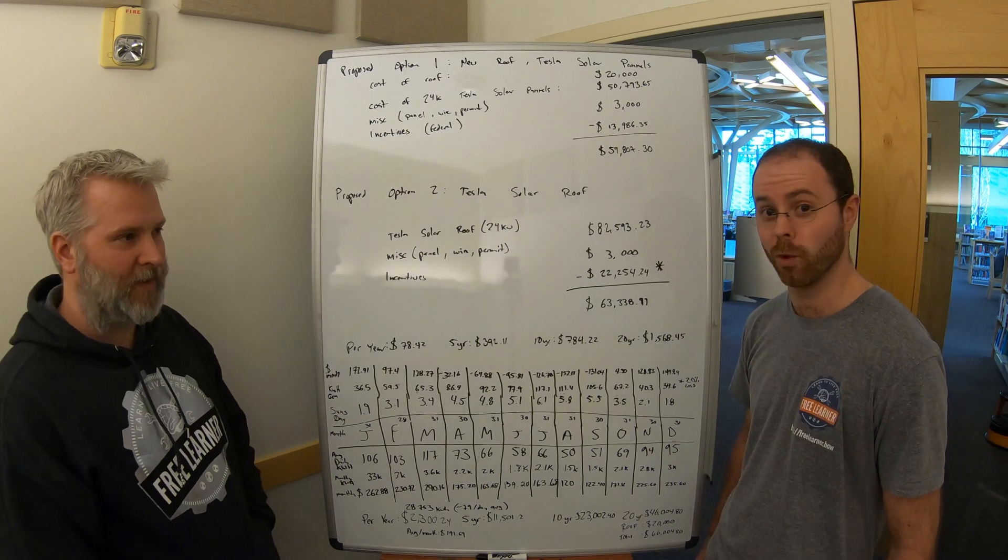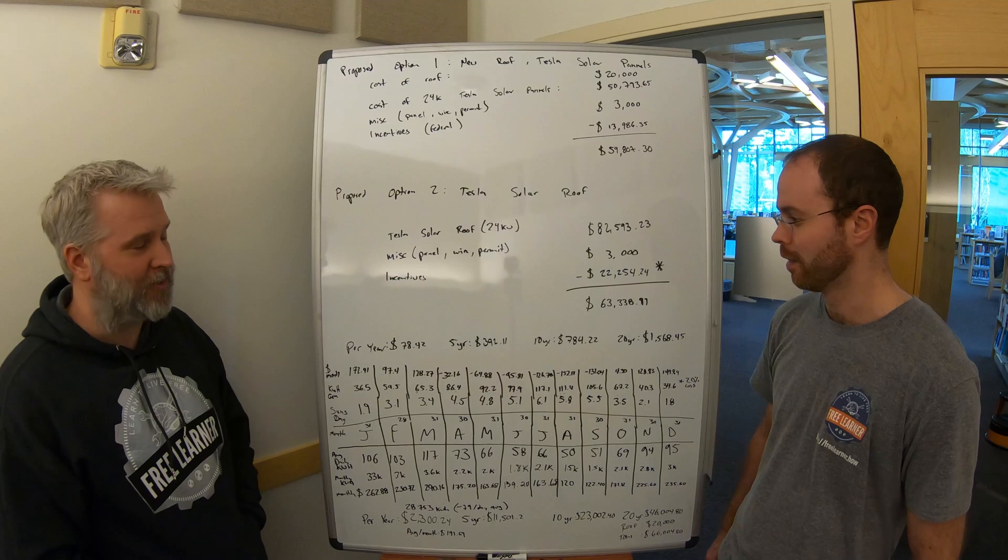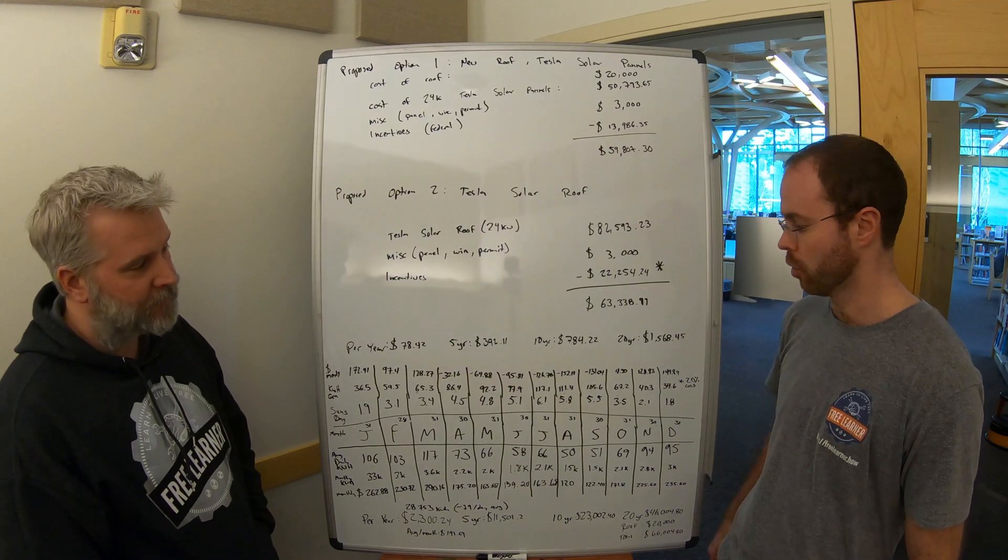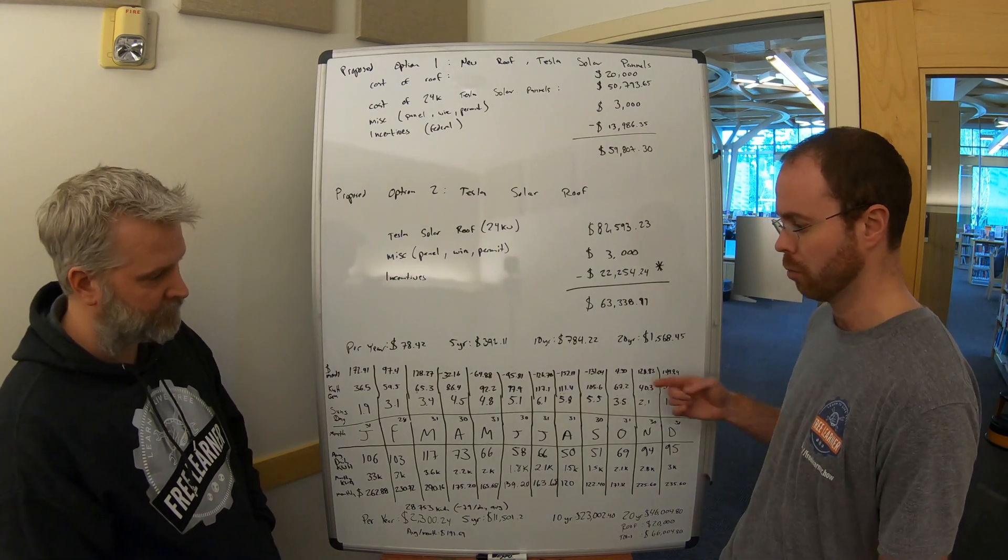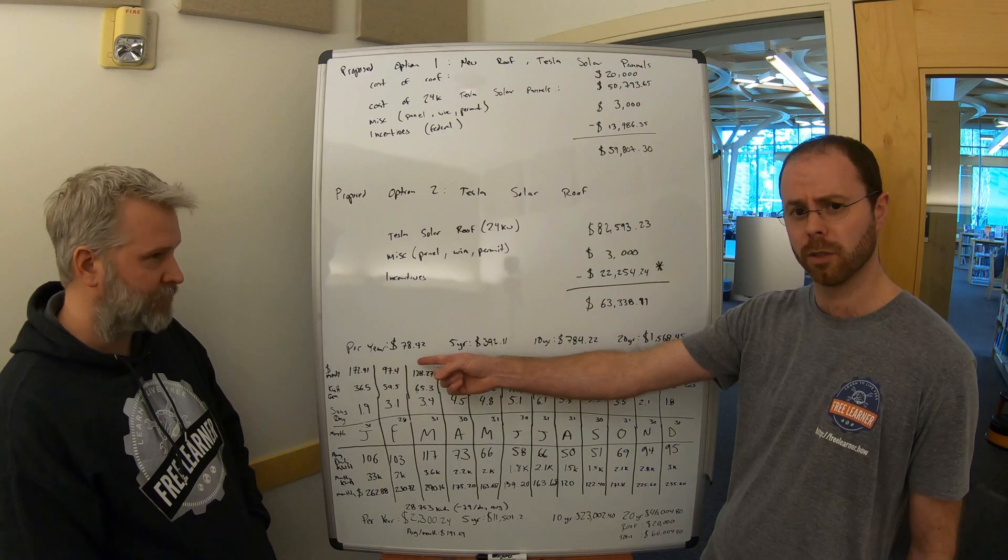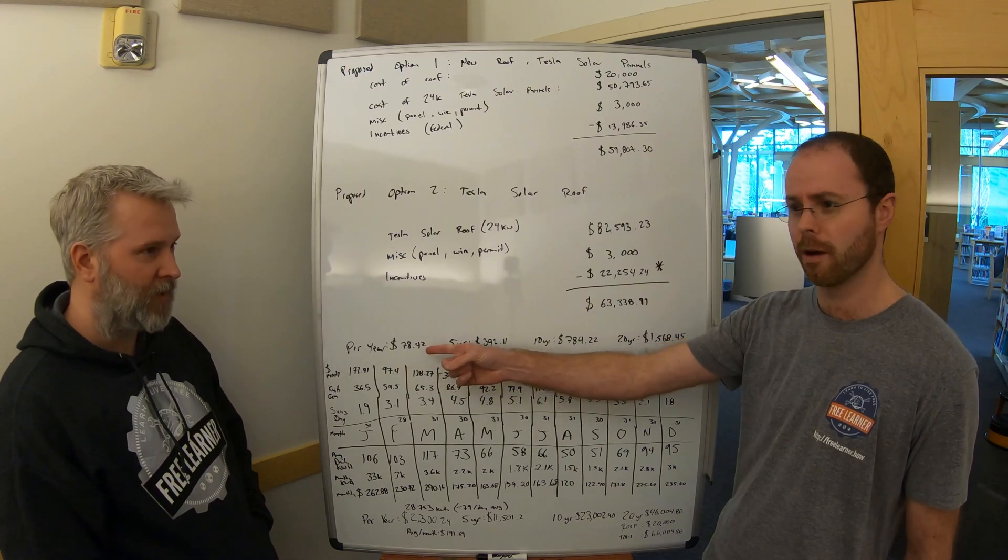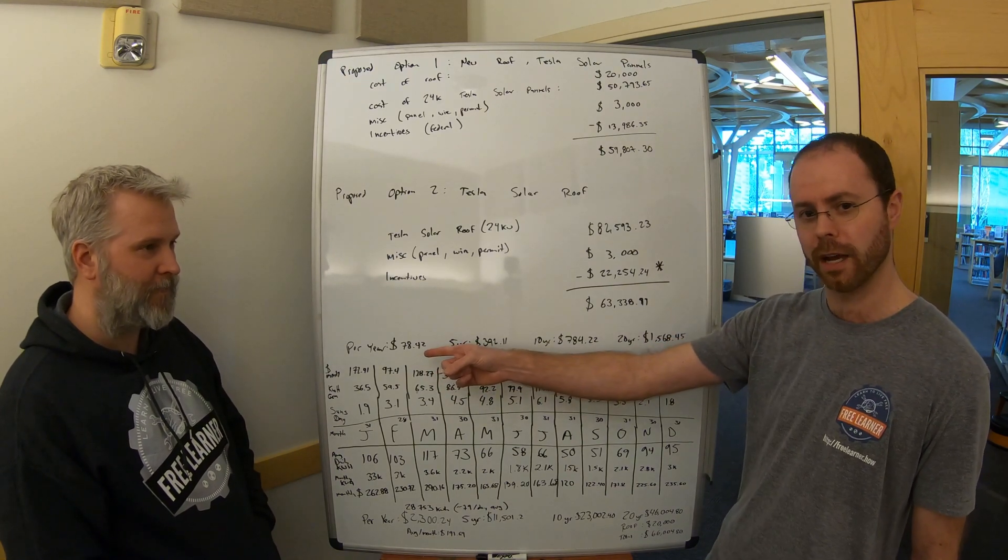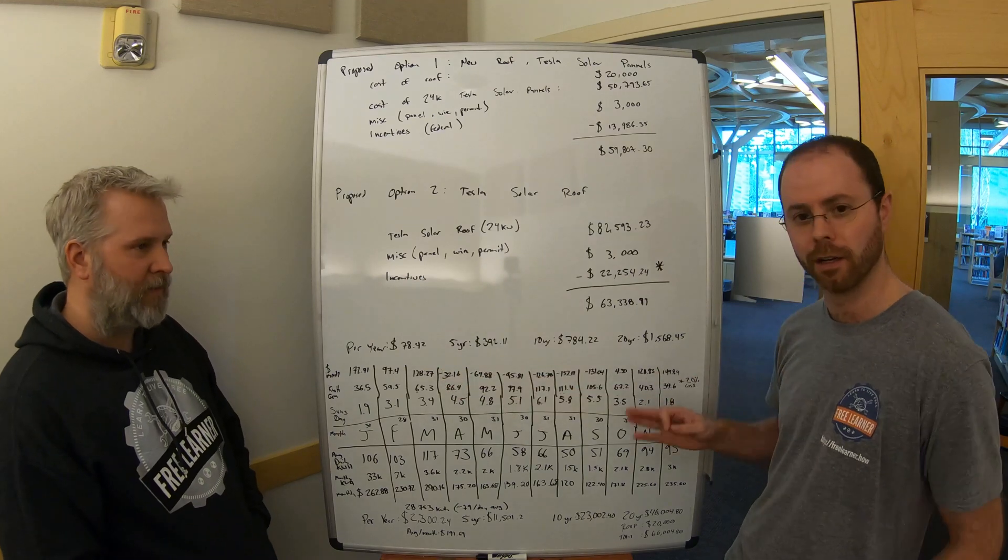So he will have to spend $117.41 during January, but he would save $152.17 in August. It's a good thing we have net metering in Washington State. Yeah, absolutely.